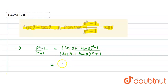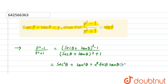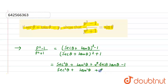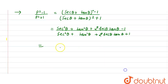Now, opening the square identity, we get sec²θ + tan²θ + 2 sec θ tan θ - 1 in the numerator, divided by sec²θ + tan²θ + 2 sec θ tan θ + 1 in the denominator.